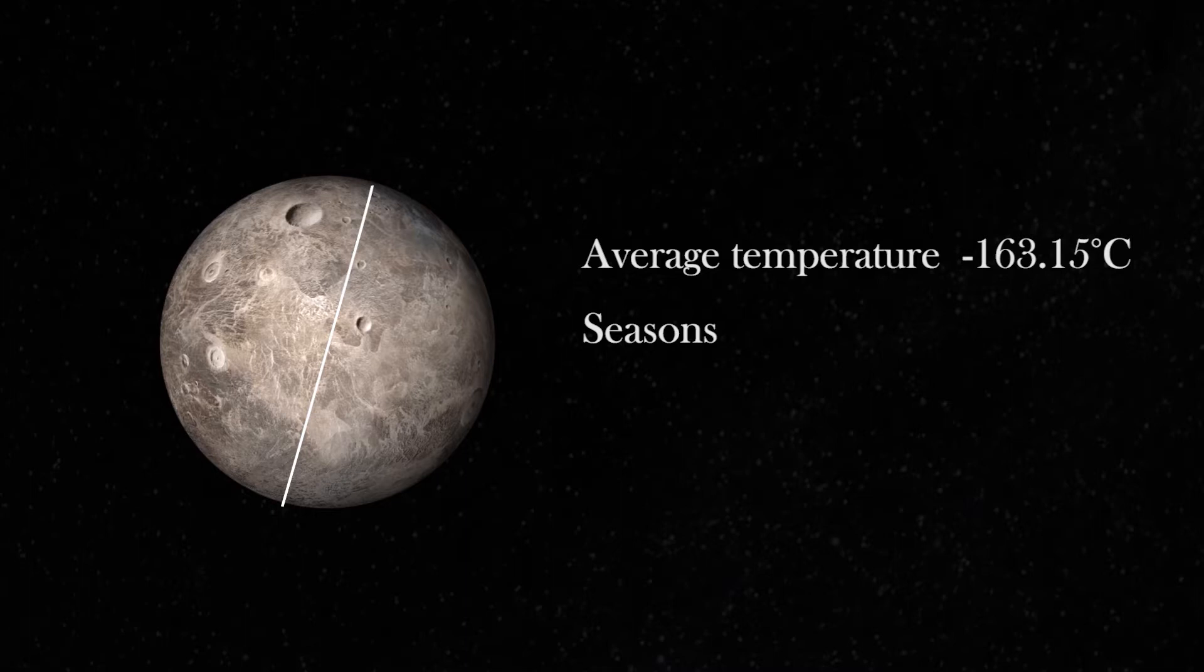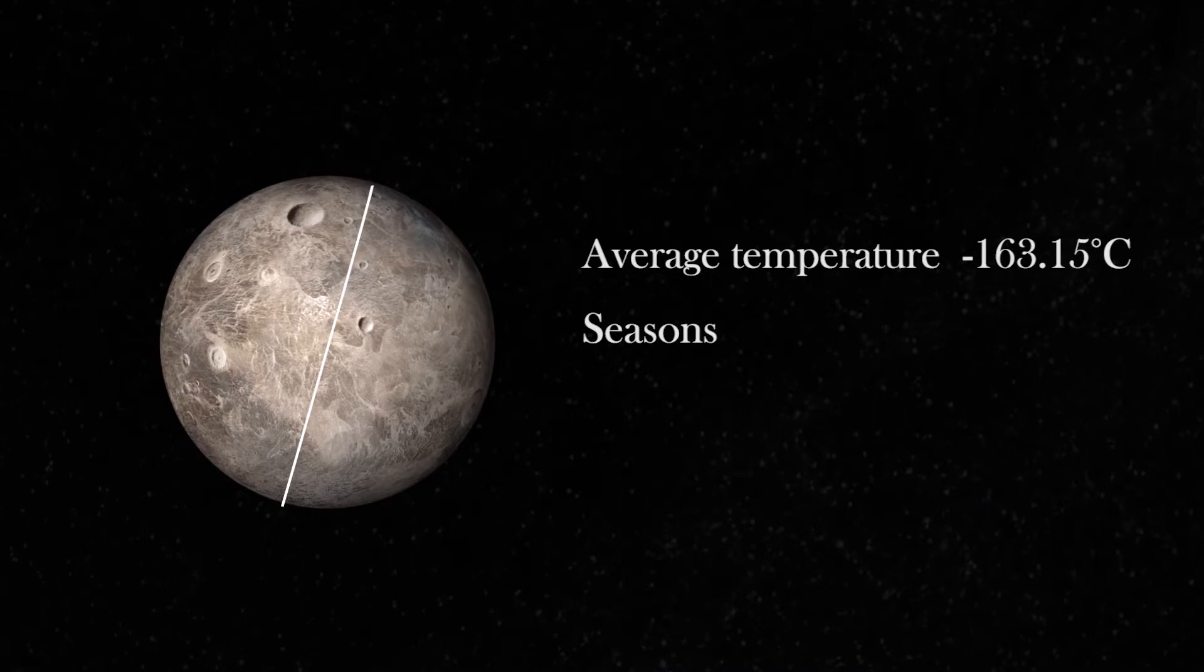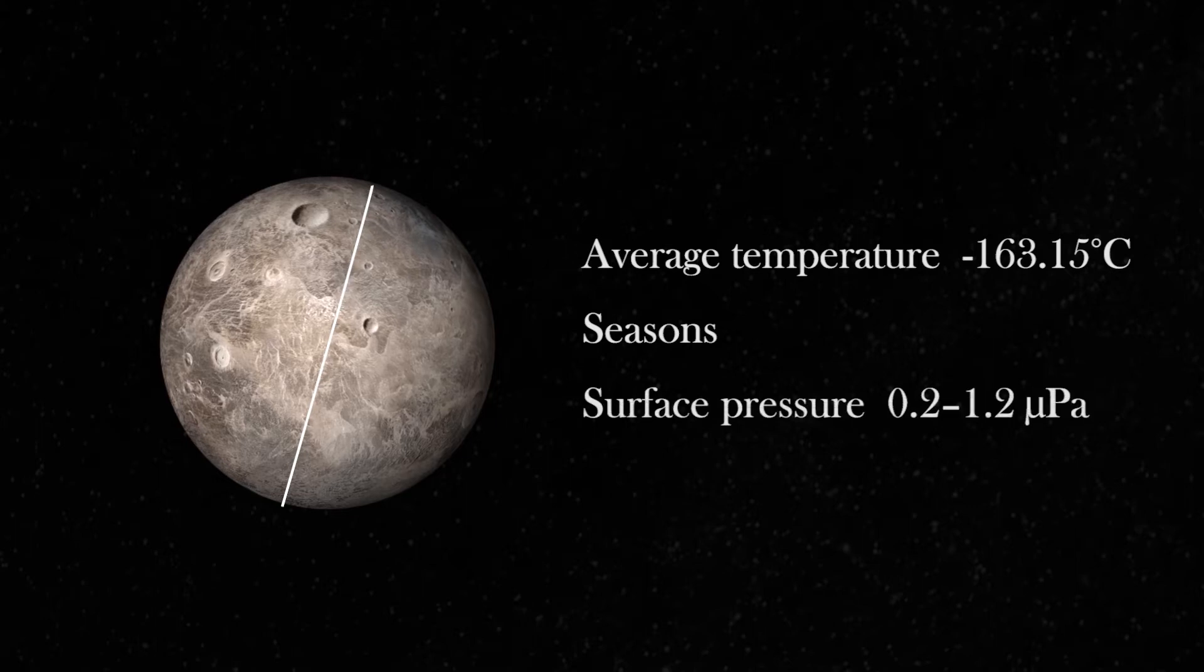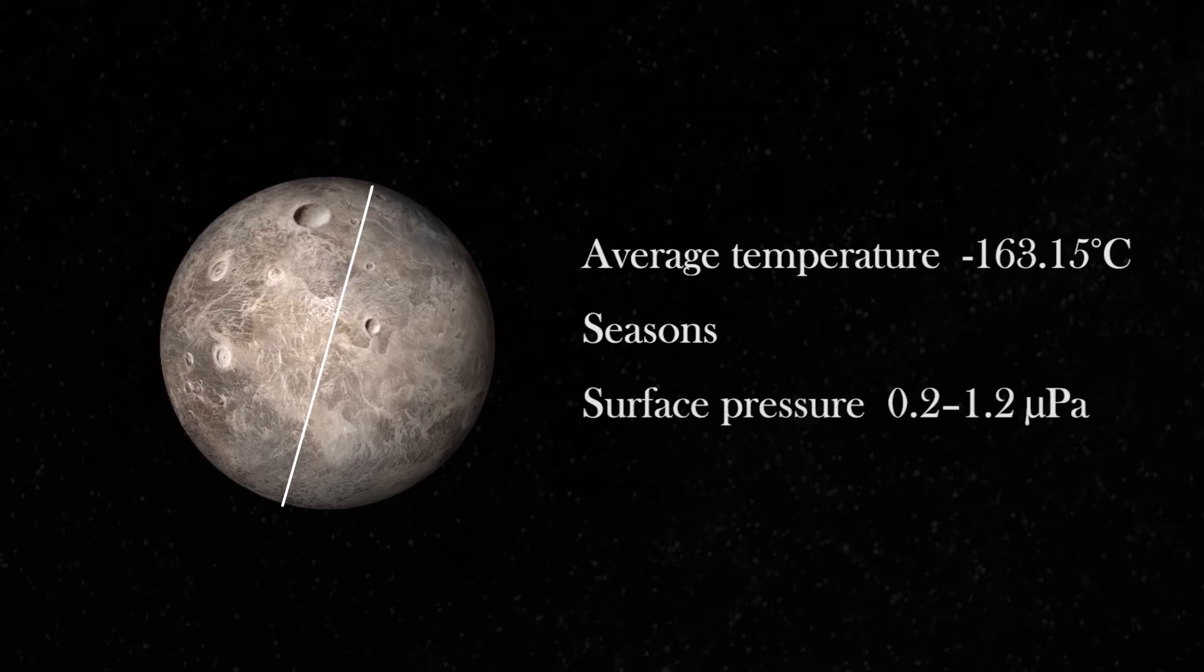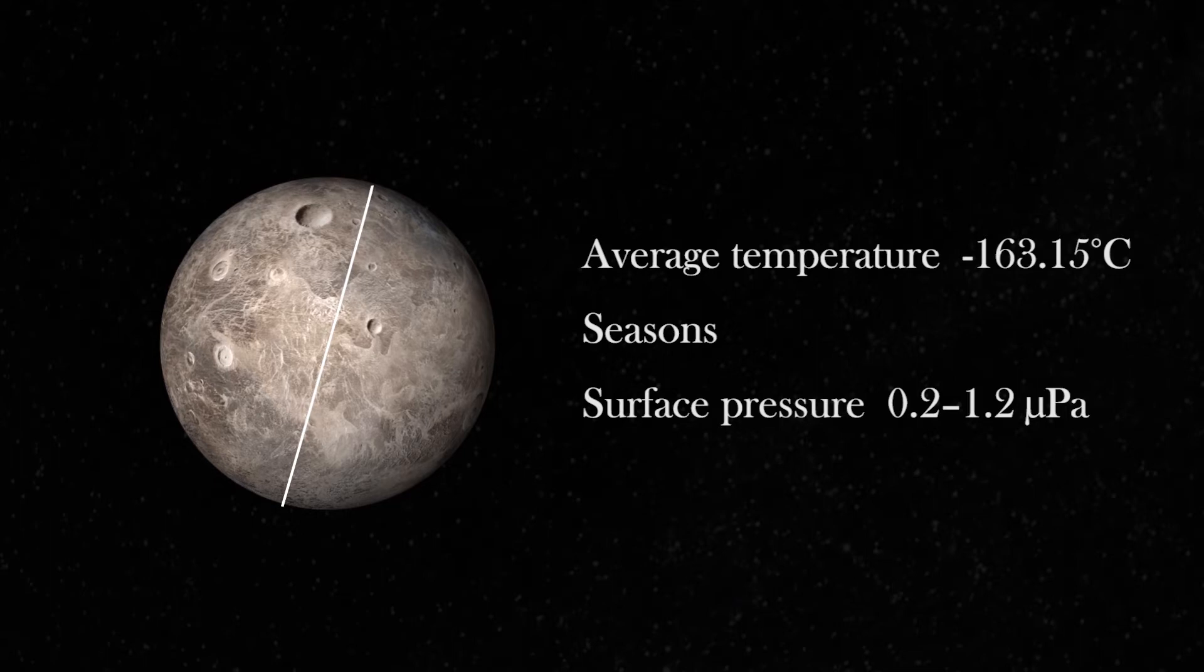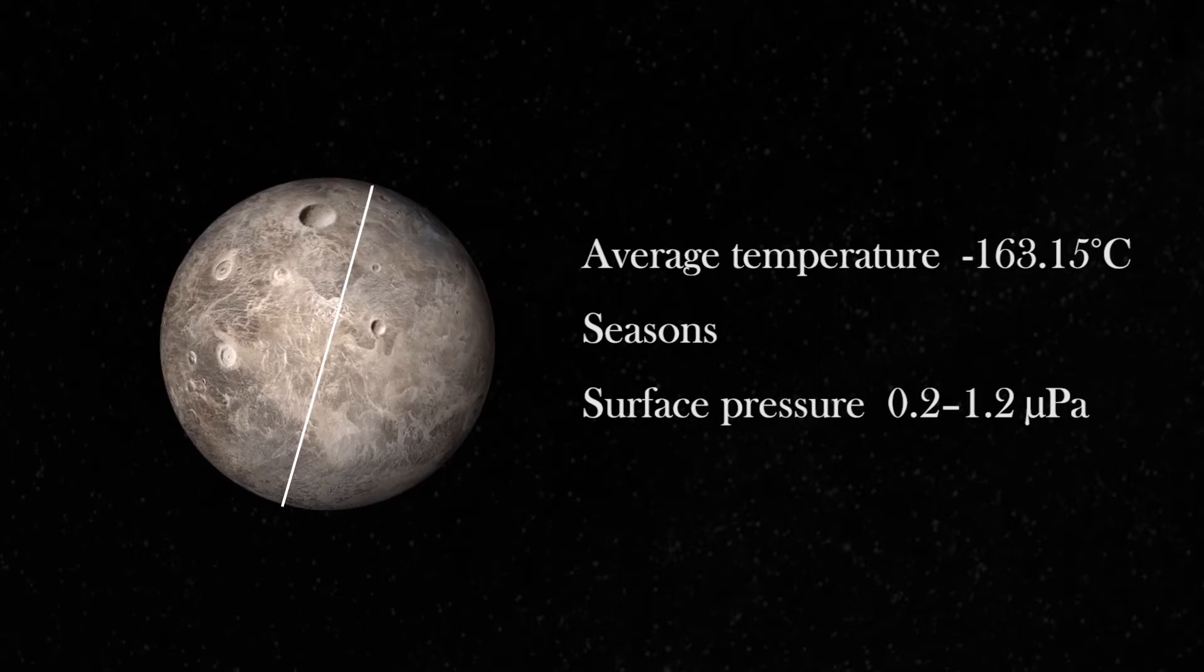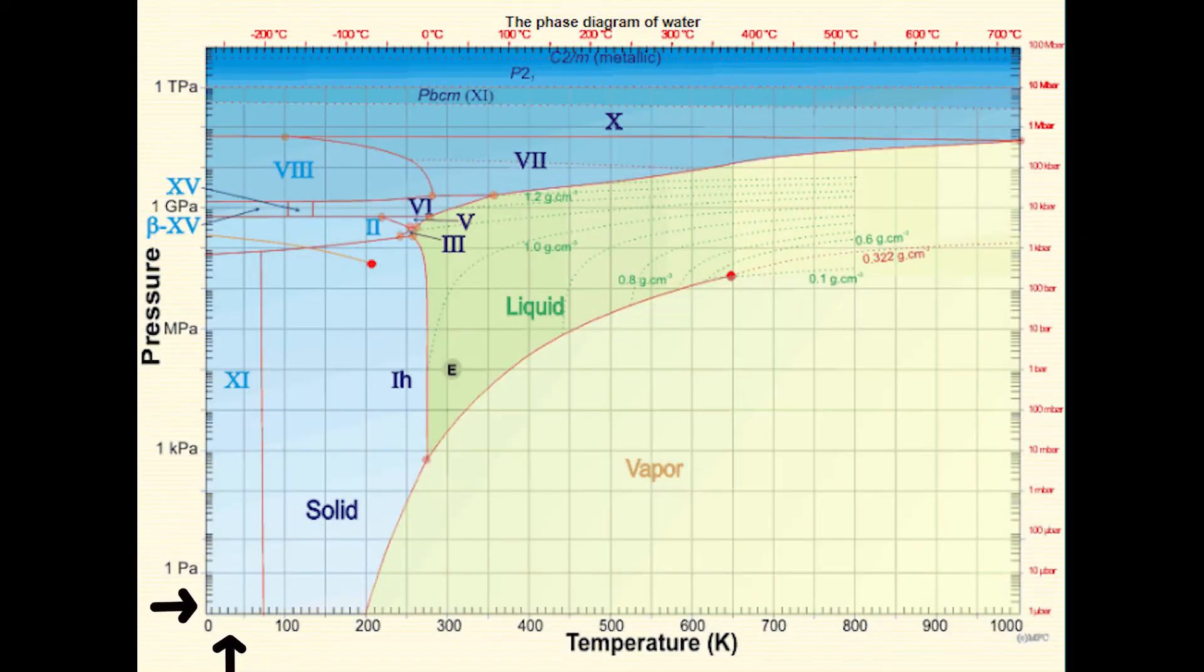At such low temperature, we expect water to be in its solid form. But what phase? Well, there is a tenuous oxygen atmosphere, and the surface pressure is about 0.2 to 1.2 micropascal. At this pressure range, the variation of temperature suggests a possible alternation of two water ice phases, possibly three.